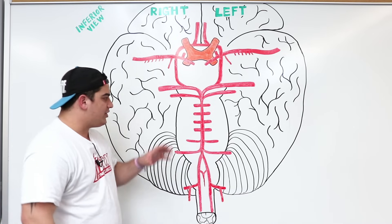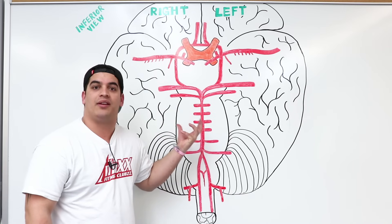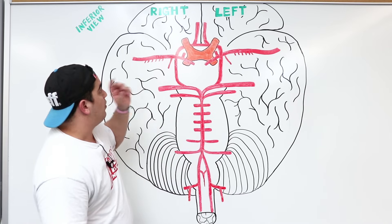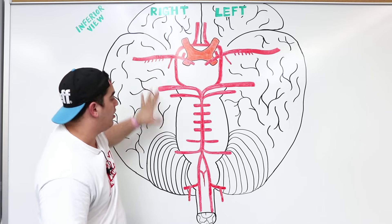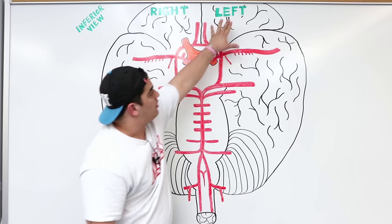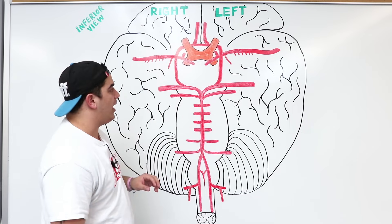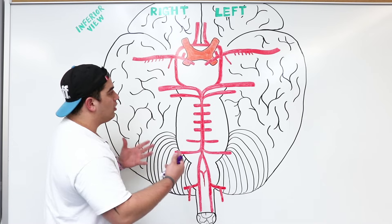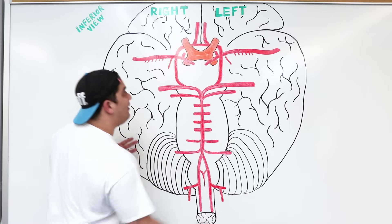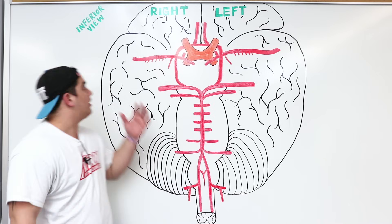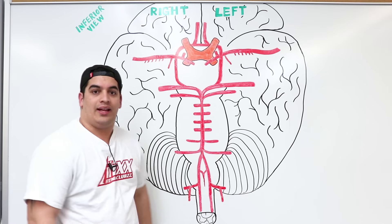Before we proceed, let me give you a quick orientation of this diagram. On the right you have the right cerebral hemisphere and right cerebellum; on the left is the left cerebral hemisphere and left cerebellum. We are looking at the Circle of Willis from an inferior view, as annotated on the diagram.